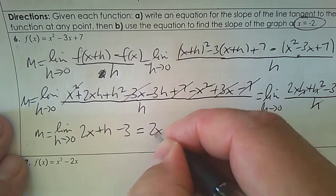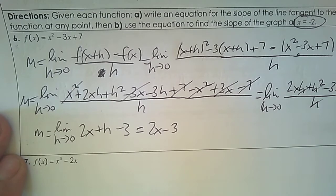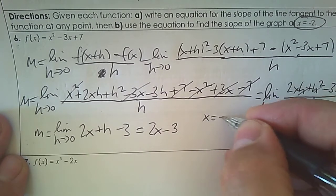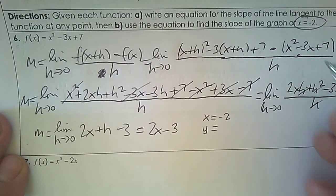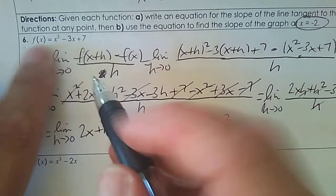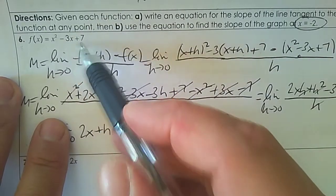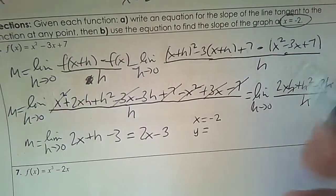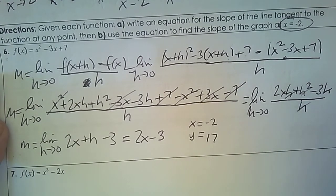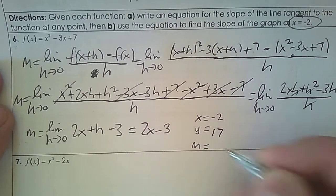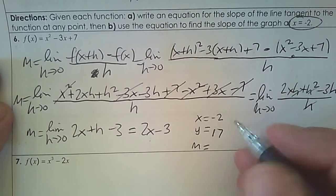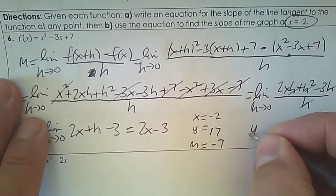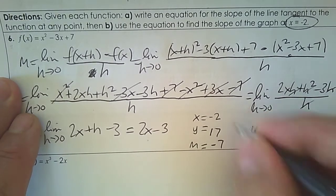Now I can substitute h=0, leaving 2x subtract 3 for the slope formula. No matter what x is, I can find the slope at any point. For x equals negative 2: plugging into the function gives 4 plus 6 plus 7, which is 17. Plugging negative 2 into the slope 2x minus 3 gives negative 4 minus 3, which is negative 7. So the slope is negative 7.